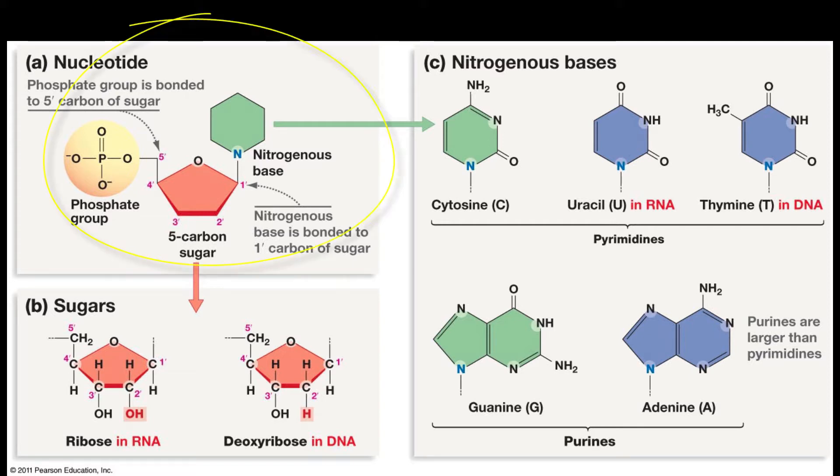The building block, or monomer, of nucleic acids is nucleotides. Nucleotides are composed of a sugar, a phosphate group, and a nitrogenous base.